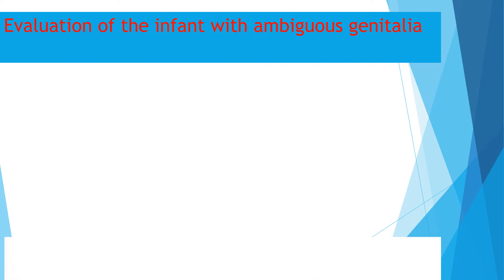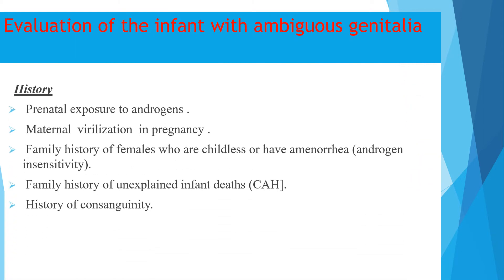When evaluating an infant with ambiguous genitalia, we should start from history. Ask about prenatal exposure to androgens, maternal virilization during pregnancy such as hirsutism, and family history of females who are childless or have amenorrhea, which may indicate androgen insensitivity syndrome if positive. Also ask about family history of unexplained infant deaths, which may suggest congenital adrenal hyperplasia. History of consanguinity should be elicited, as congenital adrenal hyperplasia is an autosomal recessive disorder that is more common in consanguineous marriages.